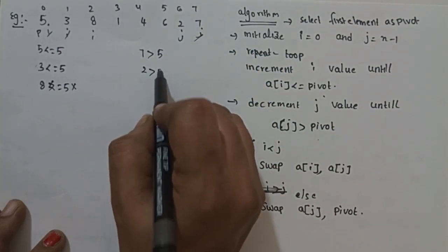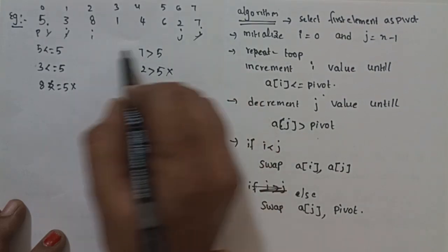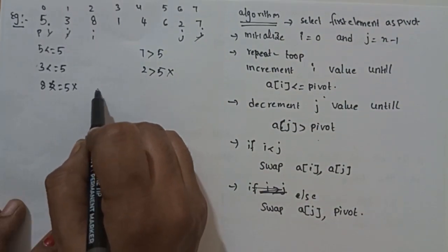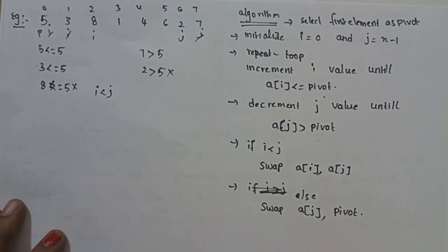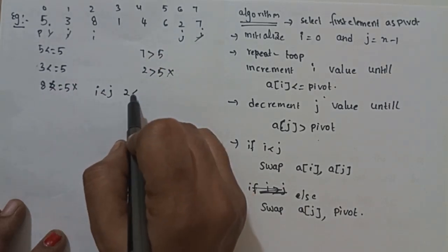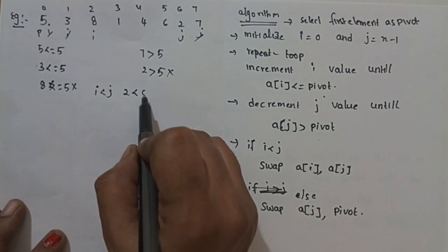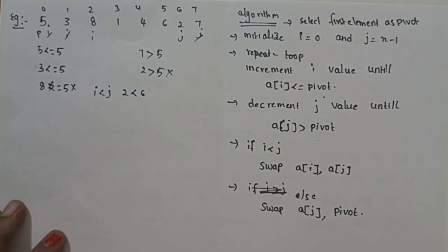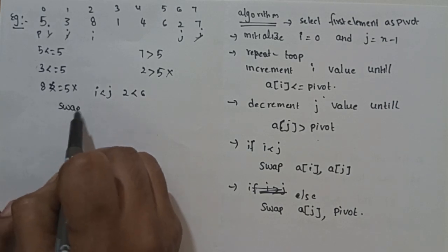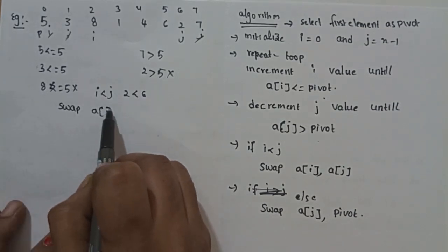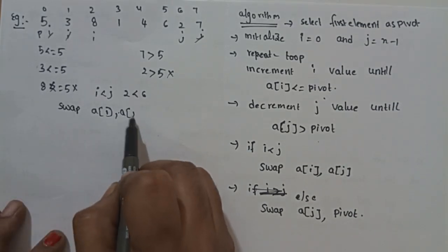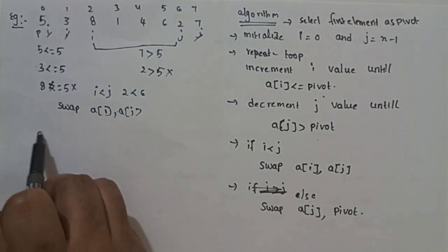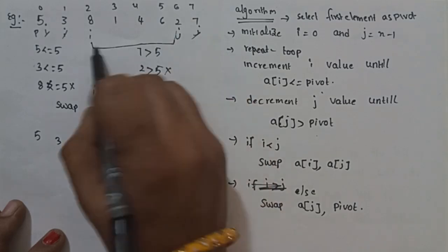Now check j: a[j] is 2, 2 greater than 5 — condition false. So j is decremented. Now check i less than j: i value is 2, j value is 6 — condition true. So swap a[i] and a[j]. The elements are swapped.